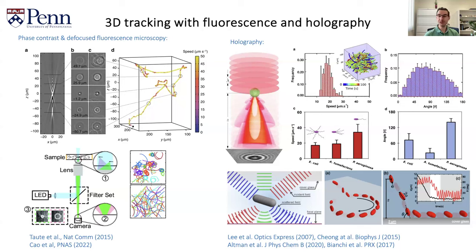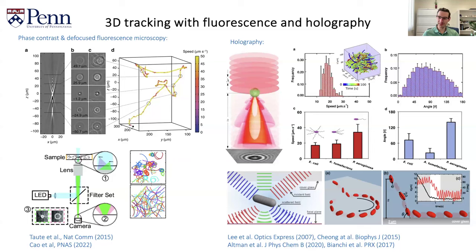You can also do this with LEDs. There's a beautiful paper by the group of Roberto Di Leonardo — the Bianchi et al. paper in PRX from 2017 — where they used three different colors, giving three different holograms at different wavelengths sitting on top of each other. From that, they were able to look at bacteria close to surfaces and how they wobble on surfaces, getting information not just about three-dimensional position but also about three-dimensional orientation. This is a very powerful technique.